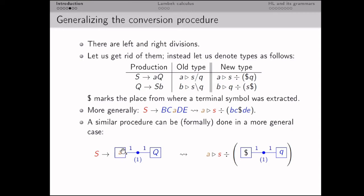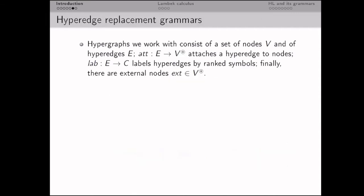We can extract that label and convert the hypergraph production into the corresponding correspondence. This is the main idea which allows one to go from hypergraph replacement grammars to a new hypergraph categorial grammar I'm going to introduce.